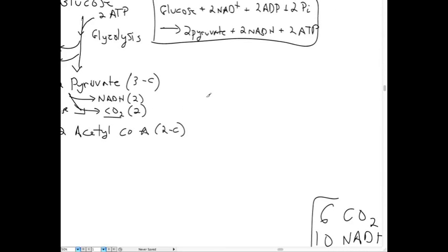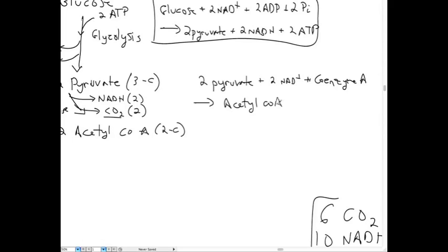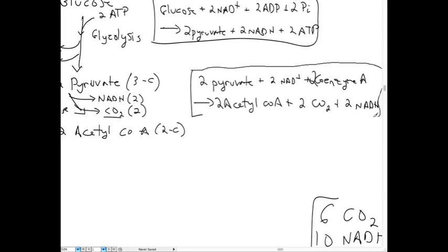The reaction formula for the pyruvate prep reaction is: 2 pyruvate + 2 NAD + 2 coenzyme A → 2 acetyl-CoA + 2 CO2 + 2 NADH. You need two molecules of coenzyme A to make two acetyl-CoAs. This shows what this one reaction is doing.